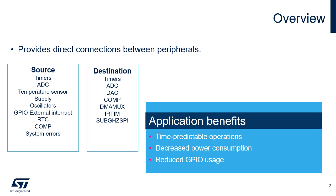Applications benefit from these interconnections to ensure time-predictable operations, to decrease power consumption by avoiding complex management of peripheral communication through reading and writing registers using CPU instructions, and in some cases, reducing the need to loop the signal from a source to a destination through a dedicated GPIO.